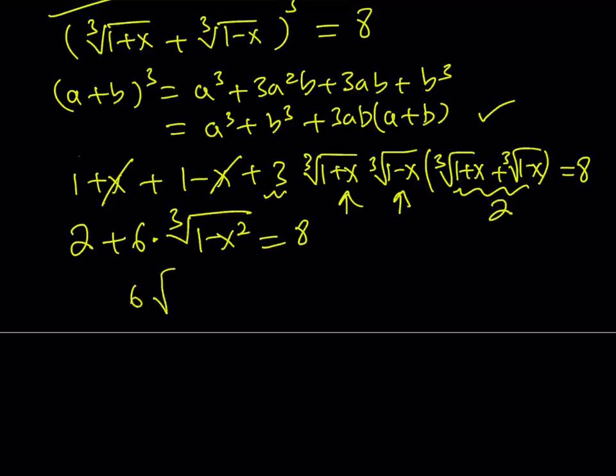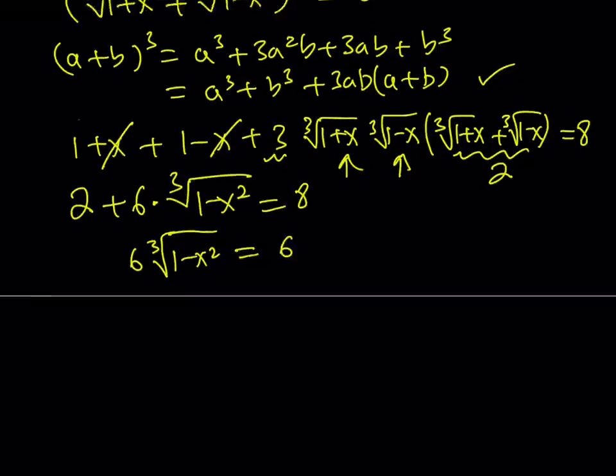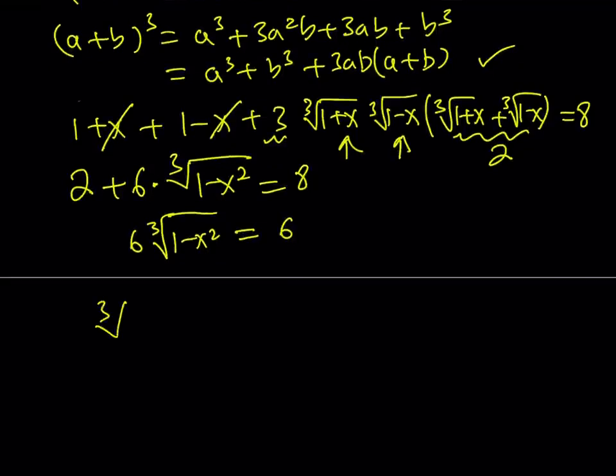So, subtract 2 from both sides, you get 6 times the cube root of 1 minus x squared is equal to 6. And if you divide both sides by 6, you get the cube root of 1 minus x squared equals 1.